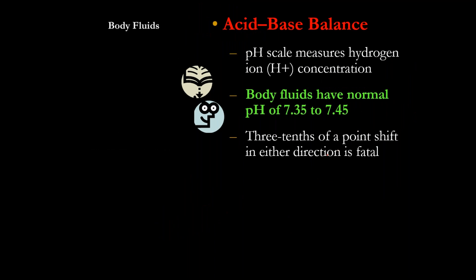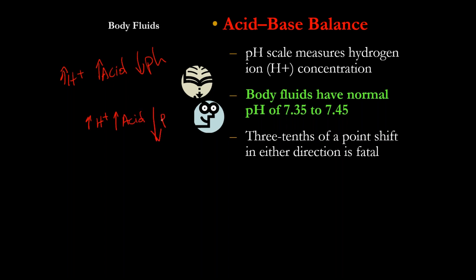For acid-base balance, the normal pH is 7.35 to 7.45. The more hydrogens, the more acid, and the pH value will be lower. On the pH scale of 0 to 14, zero is acid and 14 is alkaline. Remember: more hydrogens equals more acid equals lower pH value.